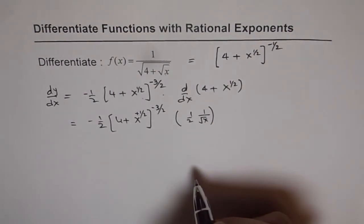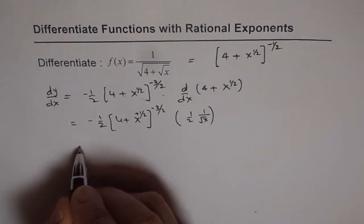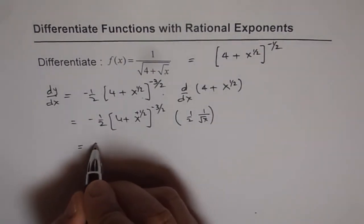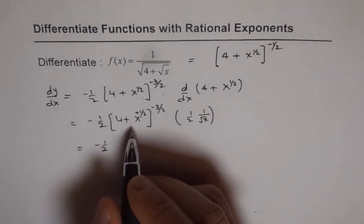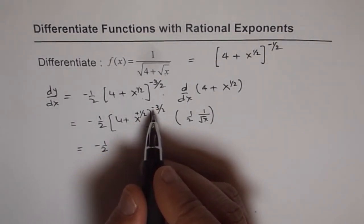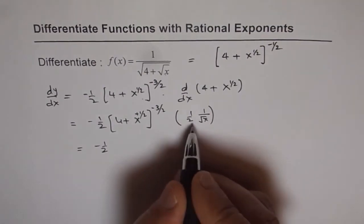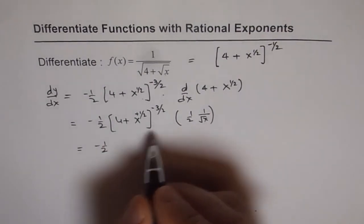So that is the derivative of this particular function. And we can write this as minus half. And this is minus power. So we can always write this as, so here also we have half.